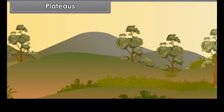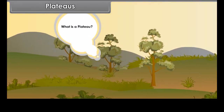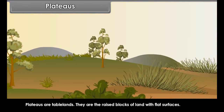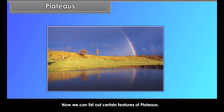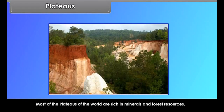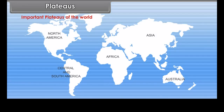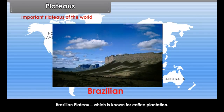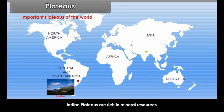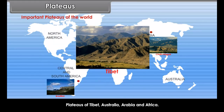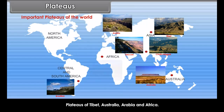Plateaus are the next type of landform. They are table lands — raised blocks of land with flat surfaces. Most of the plateaus of the world are rich in minerals and forest resources, and some are known for plantation. Important plateaus include: the Brazilian Plateau, known for coffee plantation; Indian plateaus, rich in mineral resources, such as the Deccan Plateau and Chota Nagpur Plateau; and plateaus of Tibet, Australia, Arabia and Africa.